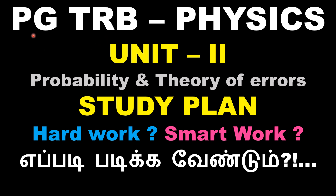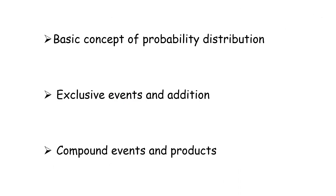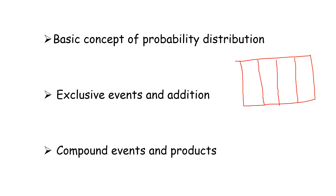Hi viewers, welcome to our channel SS Academy for Physics. In the name of PGDRB Physics Lab, you need two topics: probability and theory of errors. Study plan discussion. You already have an A3 sheet; we will discuss important points on it as a mind map. Divide the A3 sheet into 4 columns in landscape orientation, and put headings for formula, important points, and units. We will refer to these ten sheets at exam time.